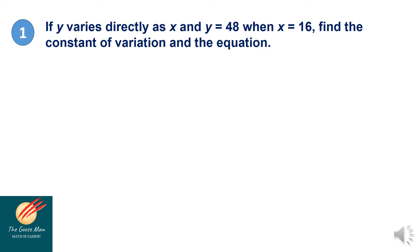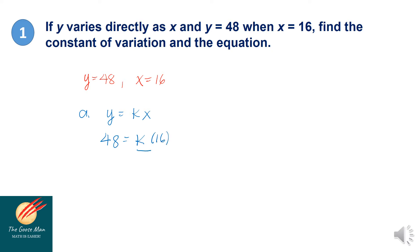Let's move on to the first problem. If y varies directly as x and y is equal to 48 when x is equal to 16, find the constant of variation and equation. First, let's list down the given: y is equal to 48 and x is equal to 16. For letter A, to find the constant of variation, we use the equation y is equal to k times x. So 48 equals k times 16. Dividing both sides by 16, k is equal to 3. So this is the constant of variation.